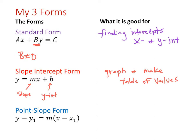Point-slope form is where you have (x₁, y₁) as an ordered pair you know about the graph, and m is again the slope. This is a situation where we're given a point and a slope, and we're going to use point-slope form to help us find equations. There are certain situations where we can't use standard or slope-intercept form because we need a particular ordered pair to help us, so point-slope form simply helps us find equations.